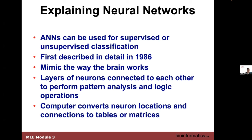The first descriptions of artificial neural networks showed up largely in a textbook, the first one coming out in 1986 — so it's only about 40 years old. They try to mimic how the brain works: they have layers of neurons connected to each other and perform pattern analysis and logic operations.